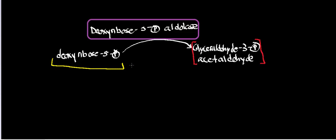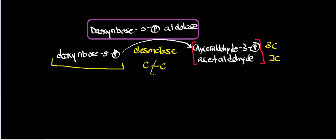In order to get rid of deoxyribose 5-phosphate and prevent its accumulation, you catabolize it into two molecules: one 3-carbon molecule called glyceraldehyde 3-phosphate, and a 2-carbon fragment called acetaldehyde. This is a desmolase reaction, meaning we're cleaving carbon-carbon bonds. A desmolase is any enzyme that cleaves a carbon-carbon bond — so we take a 5-carbon molecule, deoxyribose 5-phosphate, cleave a carbon-carbon bond, and get one 3-carbon and one 2-carbon molecule.